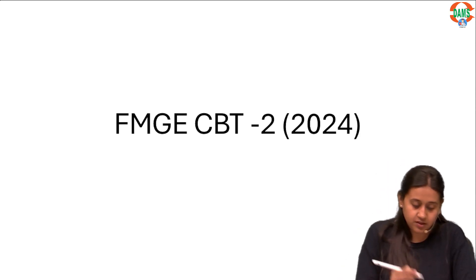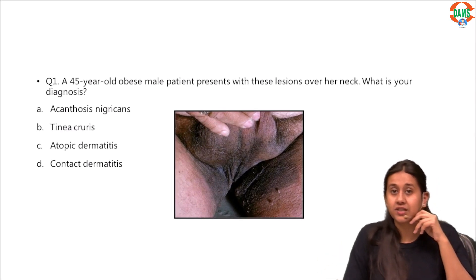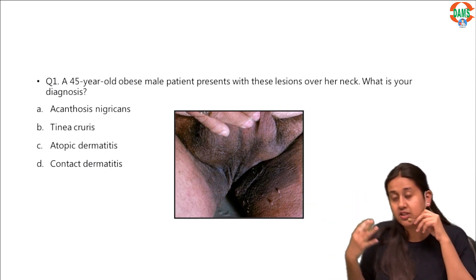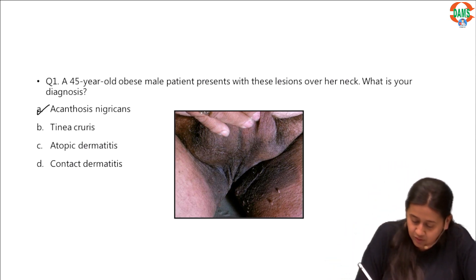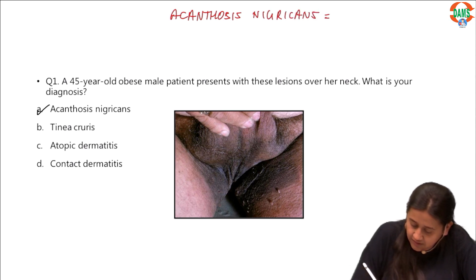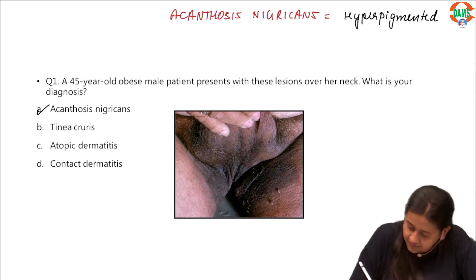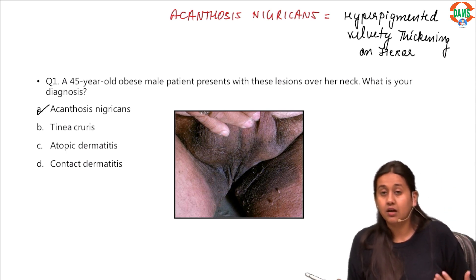Let us discuss the questions which came from dermatology in this CBT. The first question: a 45-year-old obese male presented with lesions in the groin, and the same is also present on the neck. This is a very classical example of acanthosis nigricans. Acanthosis nigricans presents with hyperpigmented velvety thickening present on the flexures — which could be the neck, groin, inframammary area, underarms, etc.